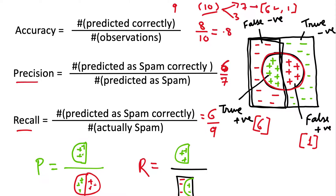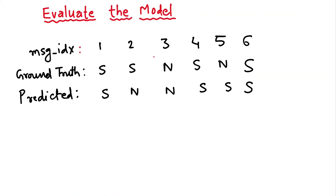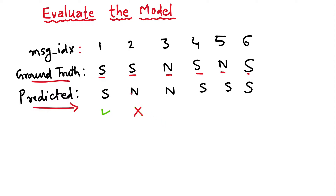Let's look at a concrete example. We have 6 messages to classify — messages 1 through 6. The ground truth labels are: spam, spam, non-spam, spam, non-spam, spam. The third row shows what the model predicted. Message 2 is wrong and message 3 is wrong; the rest are correct.